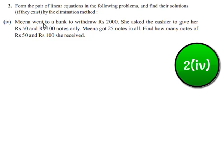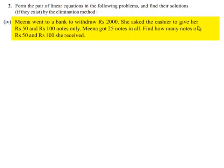Coming to the 4th bit, Meena went to a bank to withdraw Rs. 2000. She asked the cashier to give her Rs. 50 and Rs. 100 notes only. Meena got 25 notes in all. Find how many notes of Rs. 50 and Rs. 100 she received.